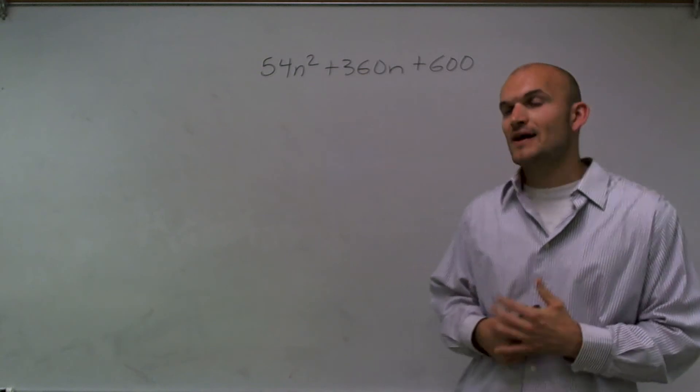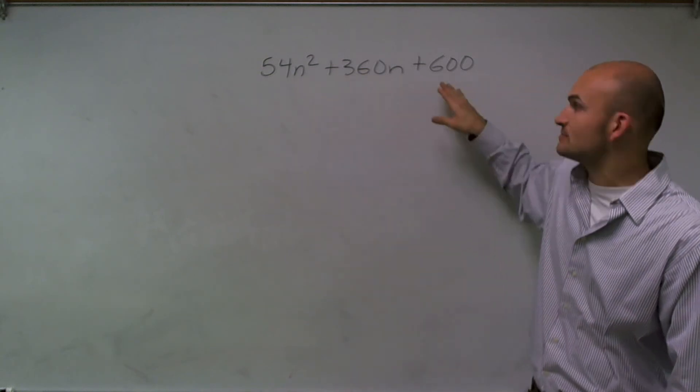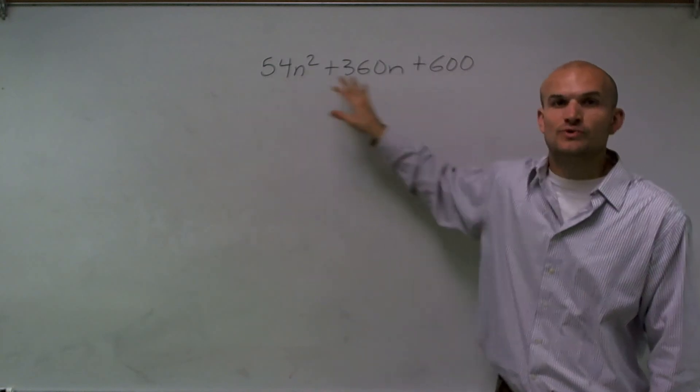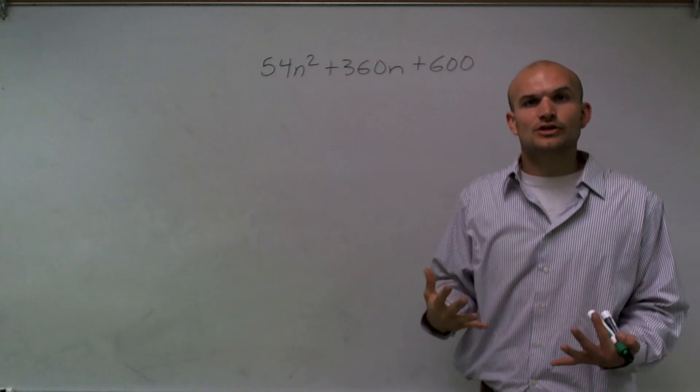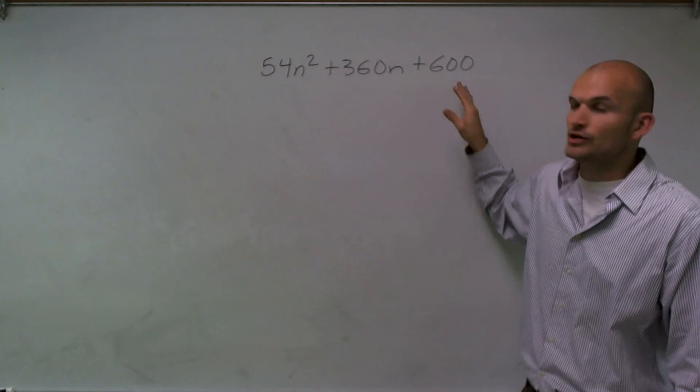Now remember, our greatest common factor is going to be a factor that we can factor out of each one of these terms. Each one of these terms we call a monomial. This is called a trinomial because there's three separate. So when you factor out your GCF, you've got to make sure that that number or variable goes into all three of our terms.